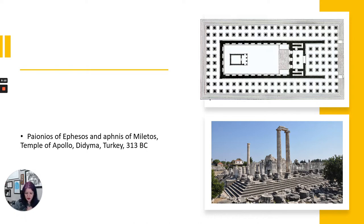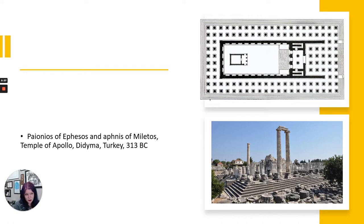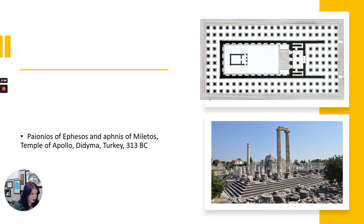This is the Temple of Apollo, and it was designed and created by Paeoneos of Ephesus and Athnis of Melitos. It's a very interesting structure. Looking at the floor plan, it's fairly elaborate — it has a double colonnade all the way around the stylobate, and also a lot of extra columns on the porch entering through the east entrance of the temple. Apollo is the sun god, so this would be facing east where the sun rises. The image below is just what is left of this, but we can tell from the ruins what the floor plan looked like.